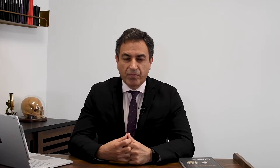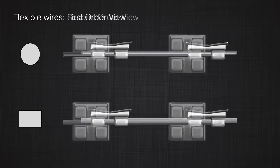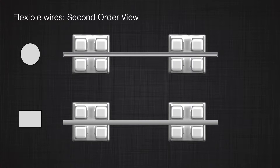Now let's look at the different shapes of wires and how that affects the third order analysis. For simplicity, assume we have a piece of round or rectangular flexible wire that has been placed between two brackets. In first order and second order view, there is no bend inside the wire. Therefore, you would not expect any moments or forces to appear in the first or second order view.